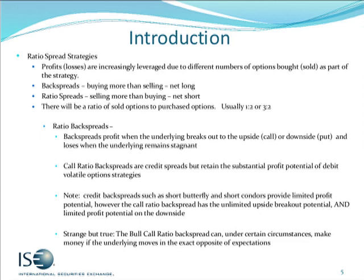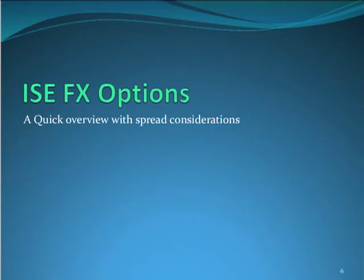The call ratio backspread. These are credit spreads, but they retain substantial profit potential compared to what we call debit-favorable option strategies like straddles and strangles. Credit strategies such as the short iron butterfly and short condors provide limited profit potential. The difference here is that the ratio backspread has substantial upside breakout potential. And strangely enough, the bull call ratio backspread can under certain circumstances make money if the underlying moves in the opposite direction than expected — we'll show you how that works through the examples.